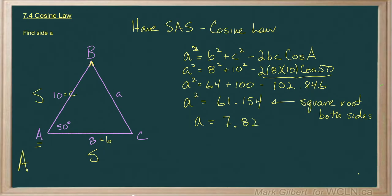Sorry about that interruption. 7.82 is our final answer for side A. Just a couple of things again. Do this part in your calculator and write it down. Very easy to make a little mistake there. And square root both sides to get the final answer.